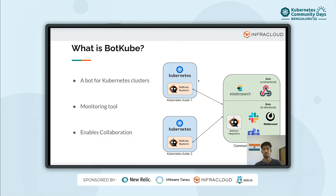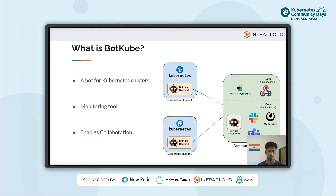BotKube is basically a chatbot for your Kubernetes cluster. It helps you monitor resource events — both resource lifecycle events and resource error events. It also helps you in collaborative debugging. It can execute kubectl commands right from your messaging platform window. For example, in Slack, you can message BotKube and it will execute the commands you want and return the response back.